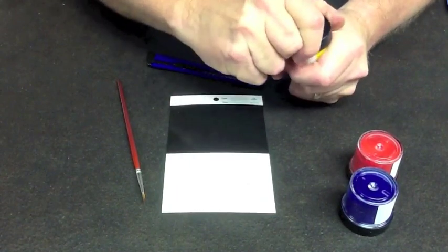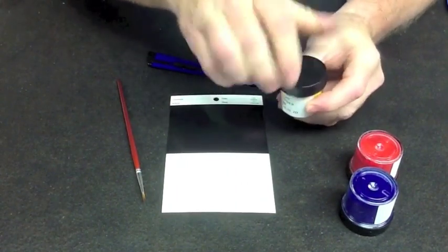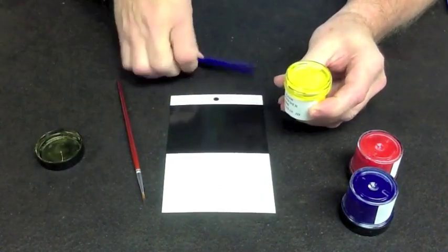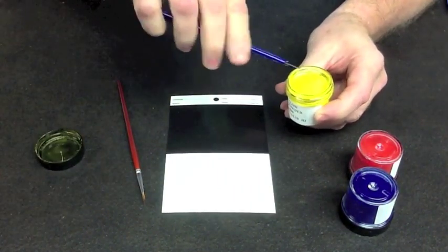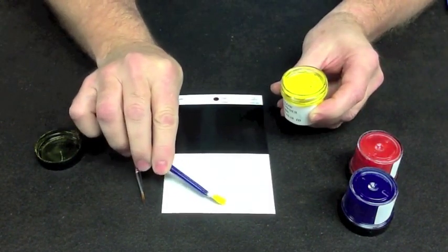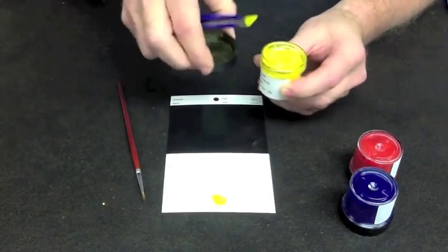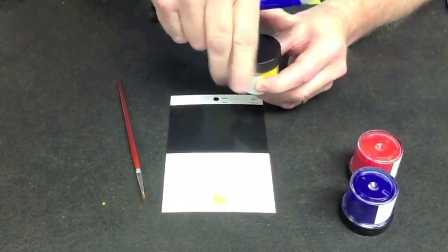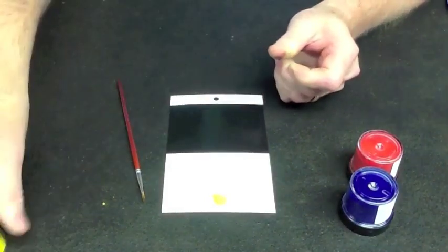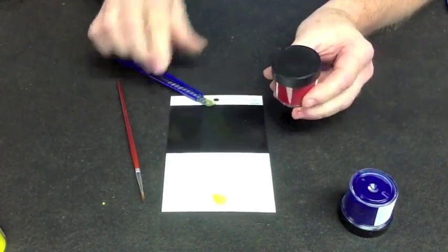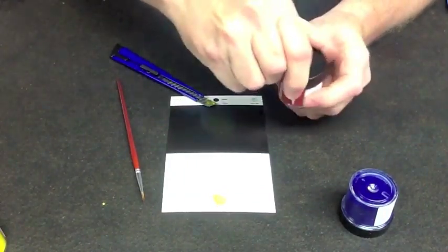So we're going to go ahead and put some pigment out here on the card and just do a little color blending and I'll be able to show you very easily how we can adjust and move color. We have yellow as one of the primary colors. These colors are very intense and we don't need a lot of material to work with.